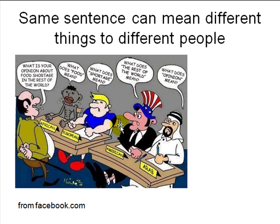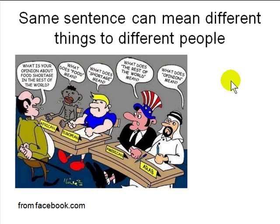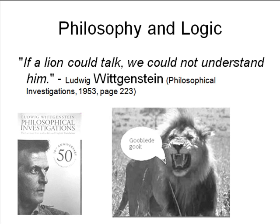The same sentence can mean different things to different people. For example, when asked 'What is your opinion about food shortage in the rest of the world?', someone responded asking what 'food,' 'shortage,' 'the rest of the world,' and 'opinion' each mean. Different people have different aspects of the world they focus on, and there's no universal guidance for meaning or context. Language and logic are deeply tied to philosophy.